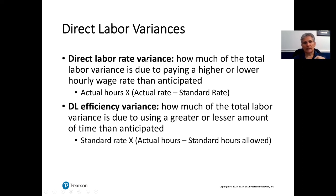We have a rate variance and an efficiency variance. The rate variance is about comparing the hourly wage rate, and the efficiency variance is the amount of actual time used versus what we were anticipating, based on how much we produced. The labor rate variance is computed as: actual rate minus standard rate, multiplied by actual hours. The efficiency variance is computed as: actual hours minus standard hours allowed, multiplied by the standard rate.